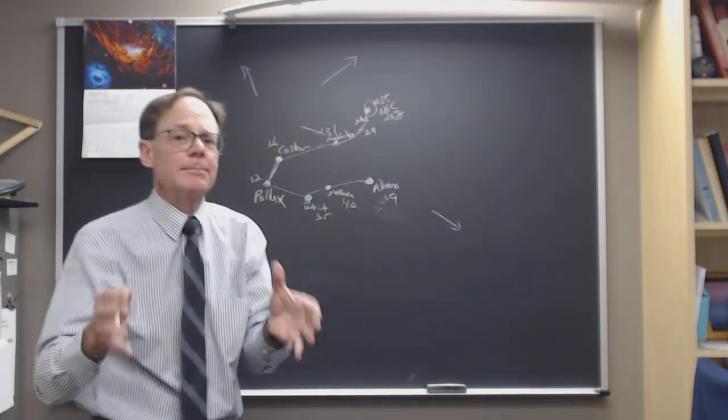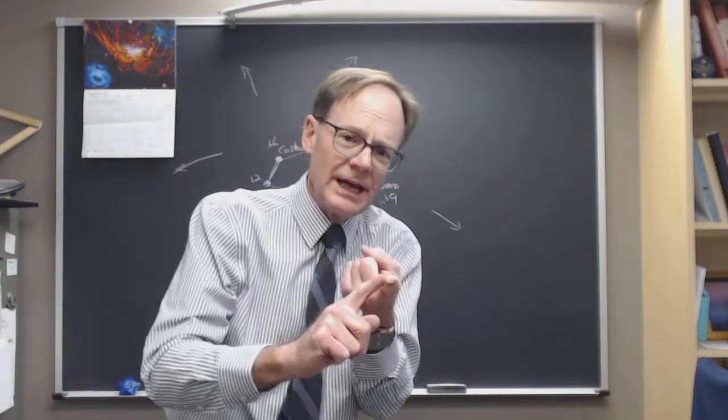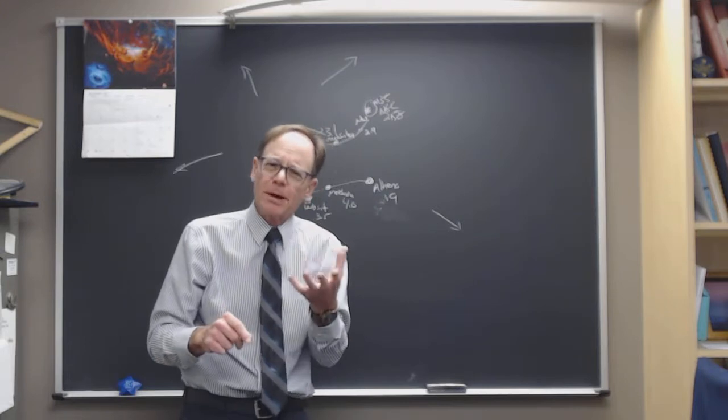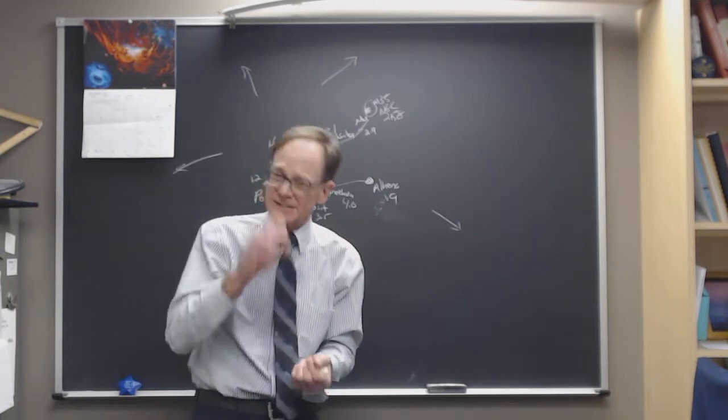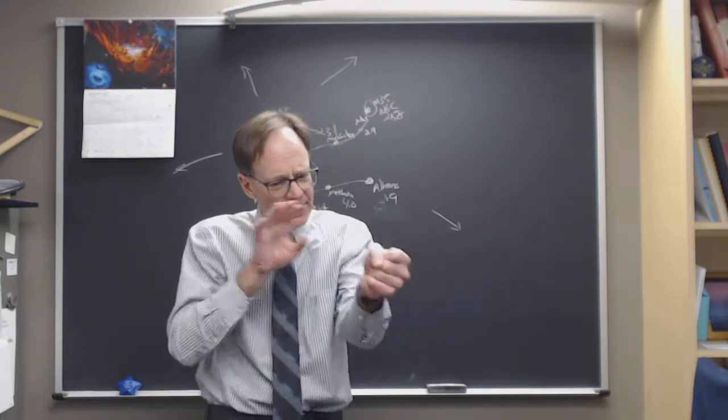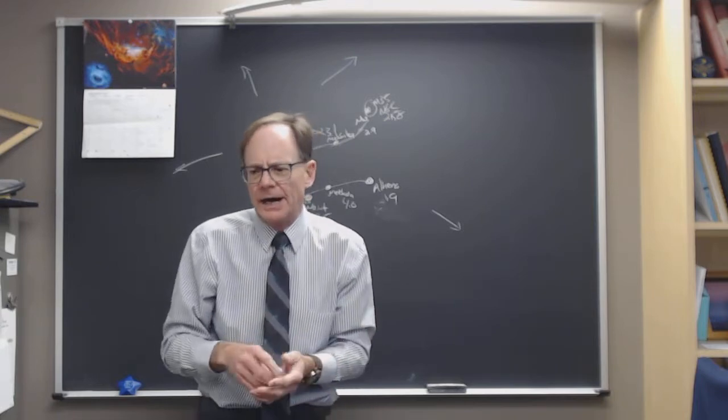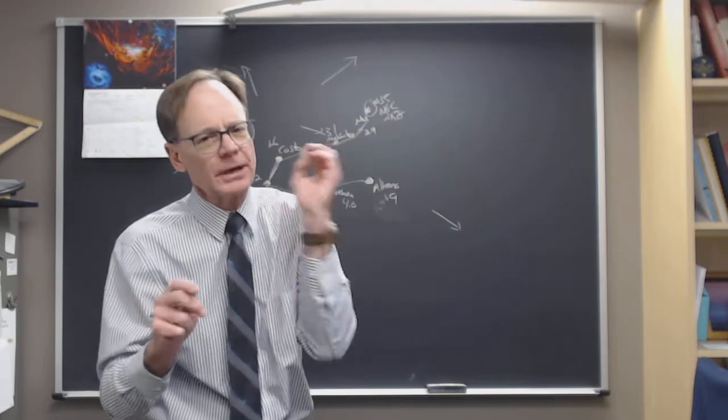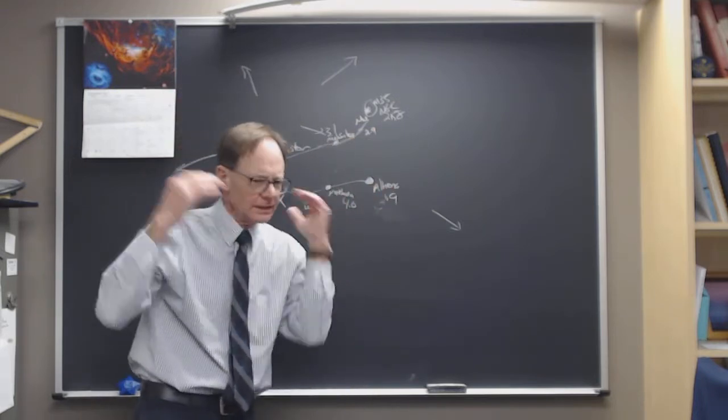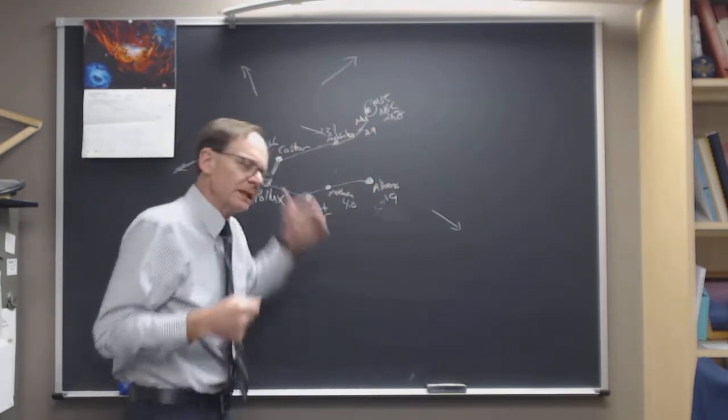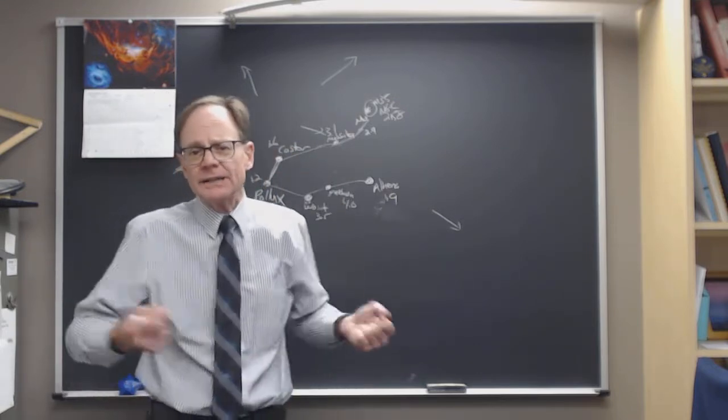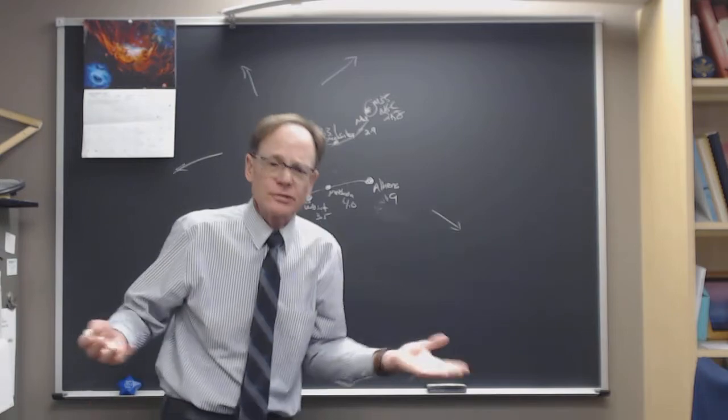So that's another thing I like about the Geminids. So one thing I like is it's reliable year to year. The second thing I like is you've got big bright meteors that can hold up to some moonlight. And sometimes they're slow, given the angle, the way we hit this cloud. Sometimes we get pretty slow meteors that make them big and long lasting and bright. They're just beautiful. They're some of the most consistent beautiful meteors that you see. But also with the radiant up at 7 or 8 o'clock at night, you don't have to stay up all night to see it.